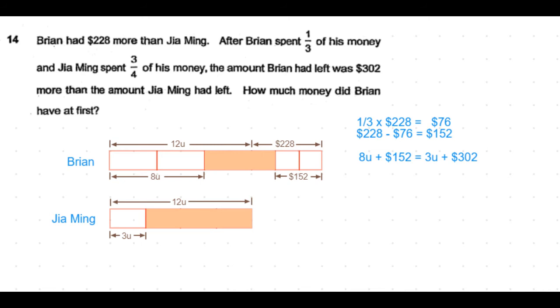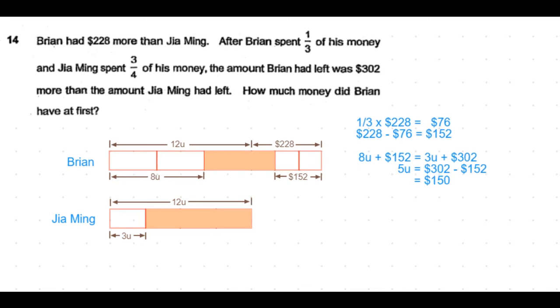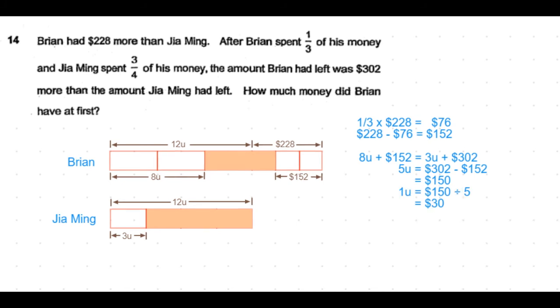So the difference is 5 units is equal to $302 - $152, which is $150. So we get the value of 1 unit to be equal to $30.